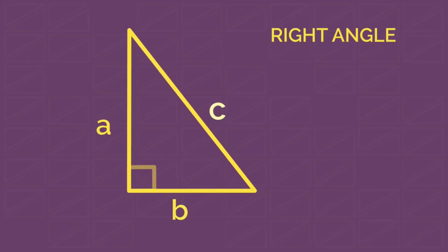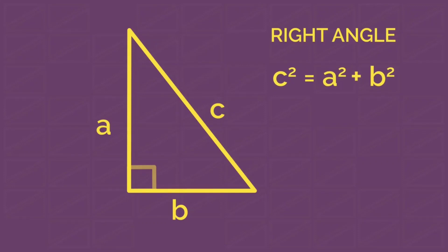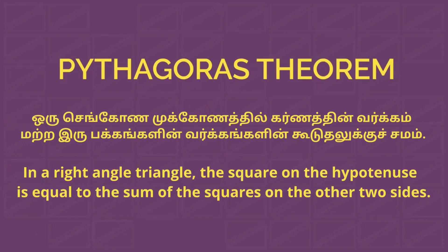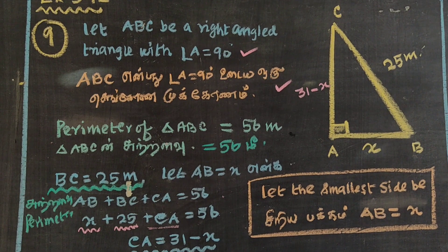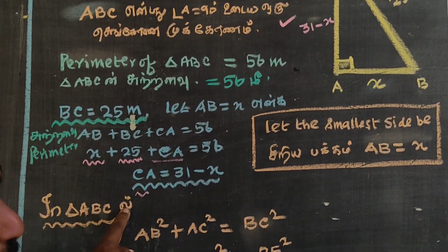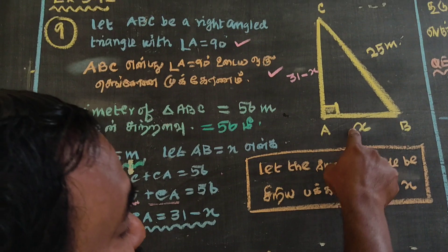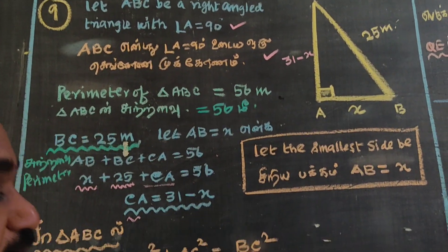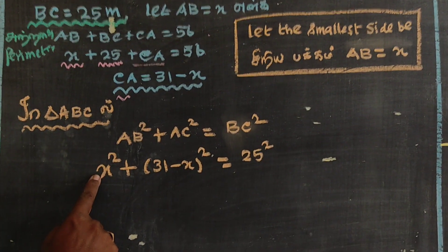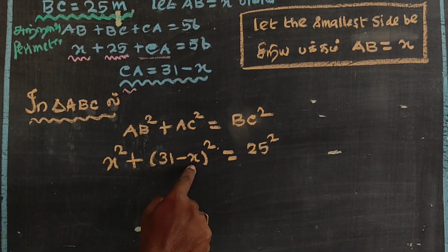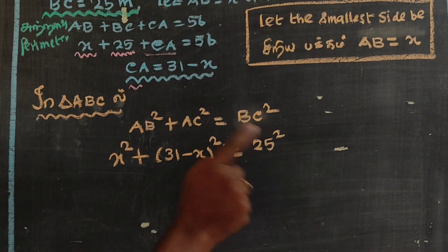What do we know about a right angle triangle? The square of the hypotenuse is equal to the sum of squares of the other two sides. So x squared plus (31 minus x) whole squared is equal to 25 squared.